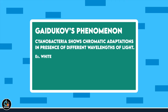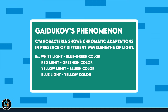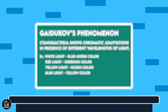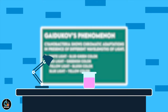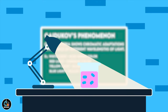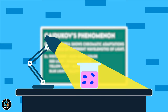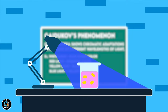This was first observed by Emerson and Gadukov and is called Gadukov's phenomena. In the presence of white light, blue-green algae show a blue-green color. In the presence of red light, they produce a greenish color. In yellow light, they appear bluish in color. And in the presence of blue light, they show a yellowish color.